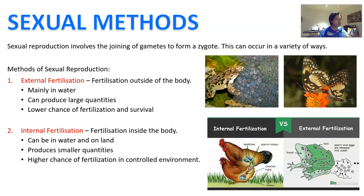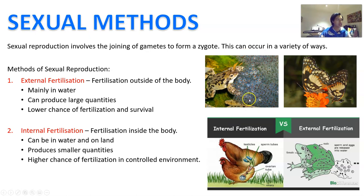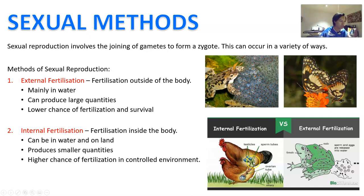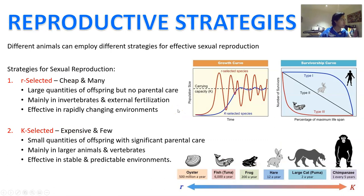On the other hand, you can have internal fertilization where fertilization happens inside the body, meaning you can have it both in water and on land. You can't produce as many eggs, but the eggs have a high chance of being fertilized because the environment in which they meet with the sperm is controlled. Here are frogs in a pond — the female lays the eggs and the male drops his sperm over them, and that is external fertilization. Internal fertilization could be like two butterflies meeting at the abdomen, or birds — they don't have a penis or vagina; they have what we call a cloaca, which is basically a hole where they connect together and the sperm fertilizes the egg in the ovaries, which then produces the egg.